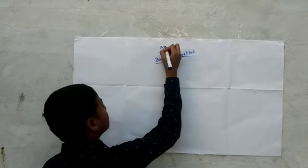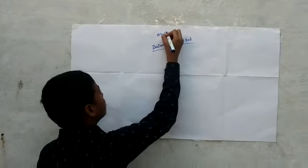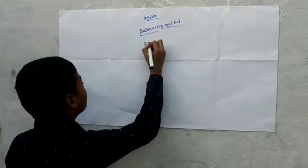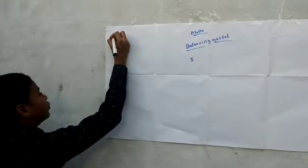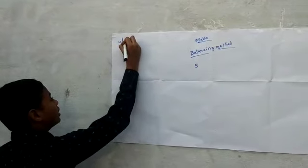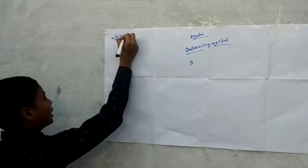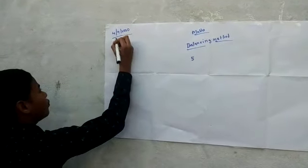Maths. Day and date. 5. Day and date. Today date 4, 9, 2020. Date Friday.